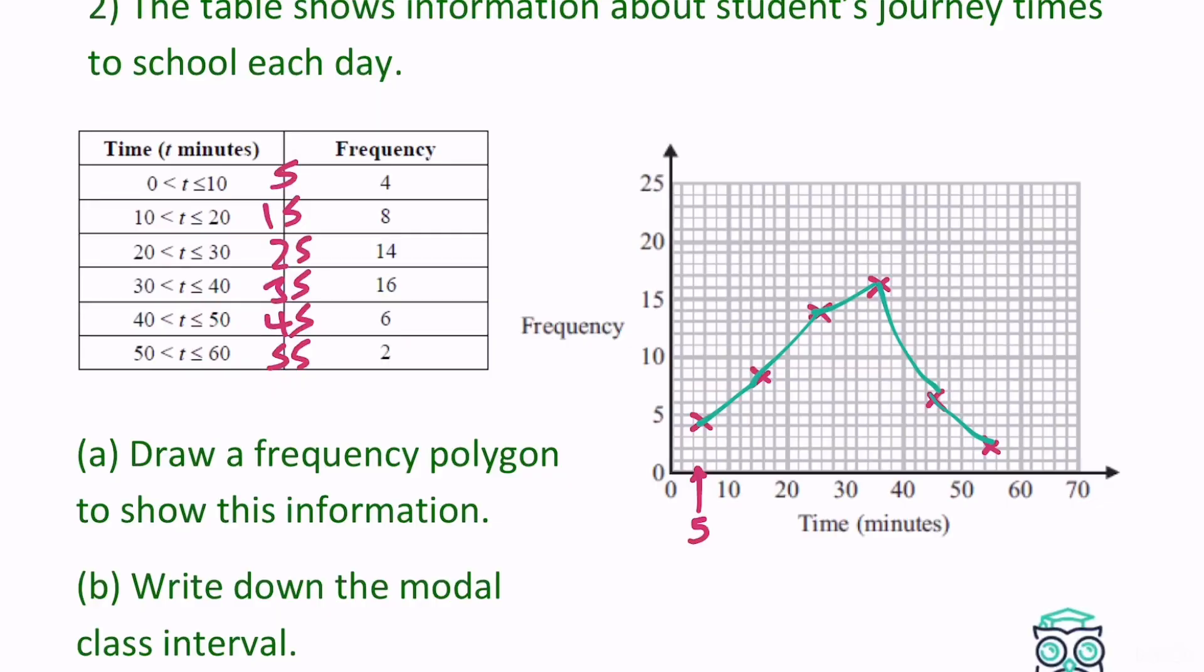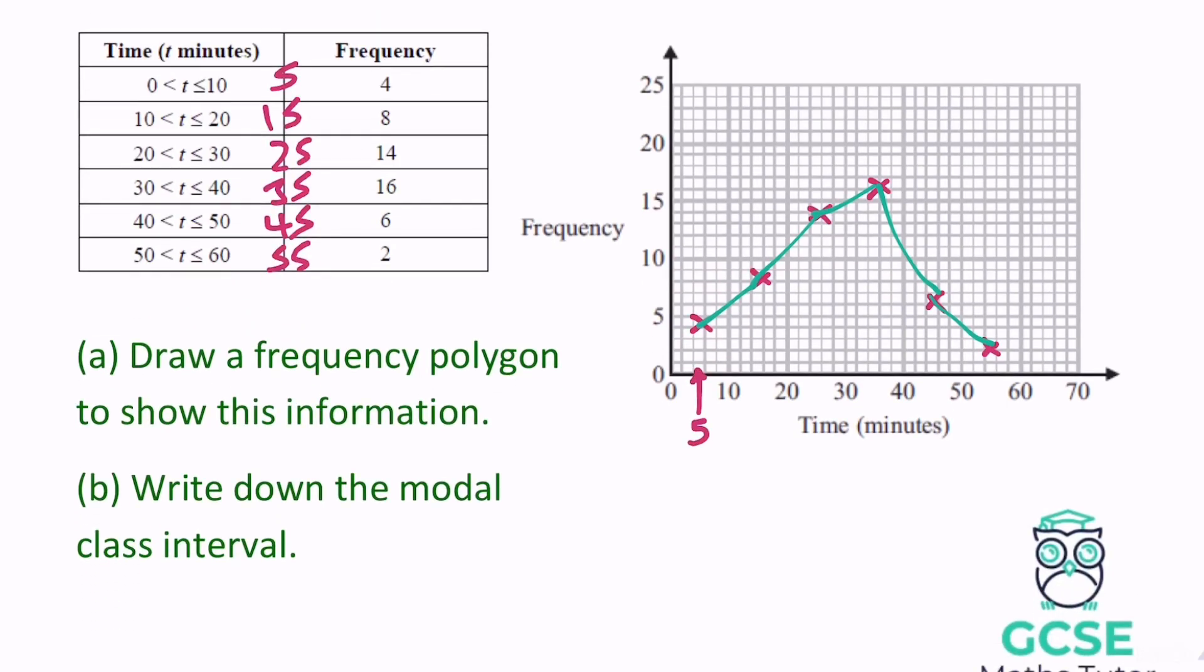This question obviously did ask though about the modal class as well, okay, in part B there, and the most common, the most frequent is that 16, which refers to the class 30 to 40, there we go, being this one here, our most common or our most frequent class there, and that's our modal class interval.